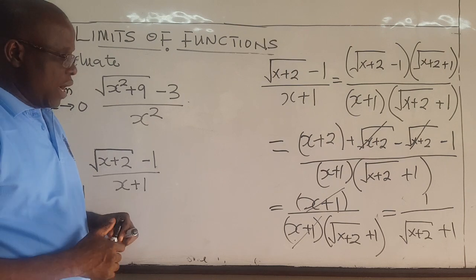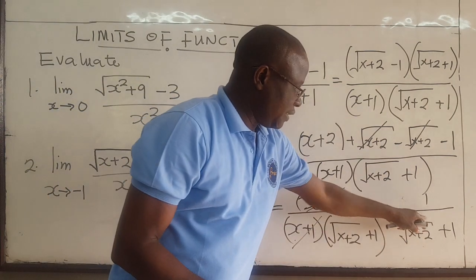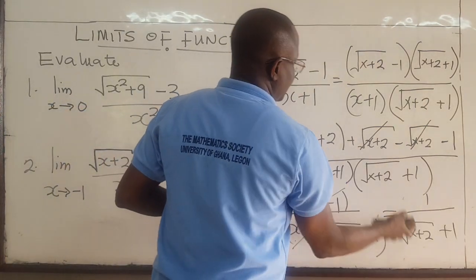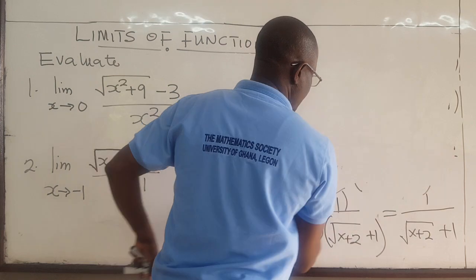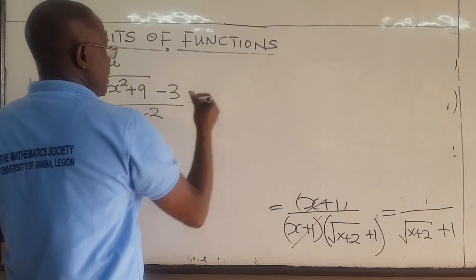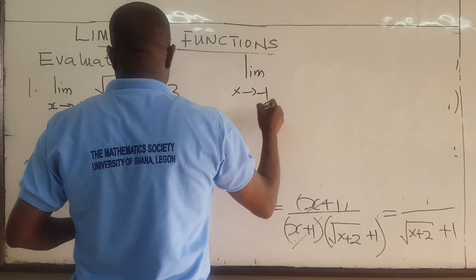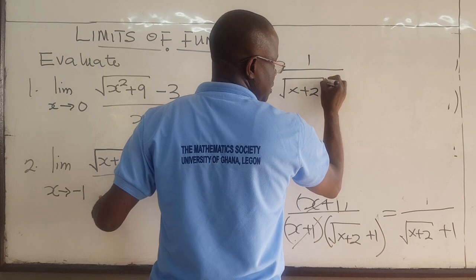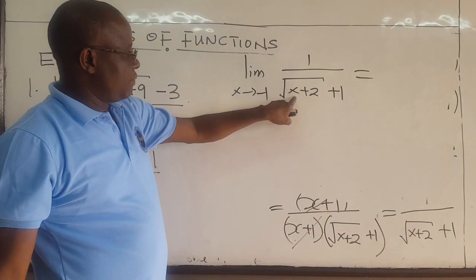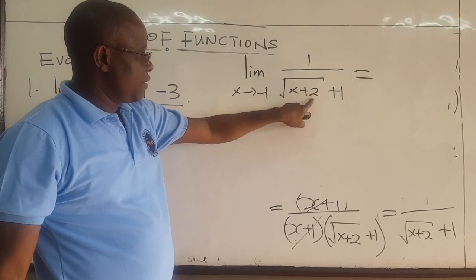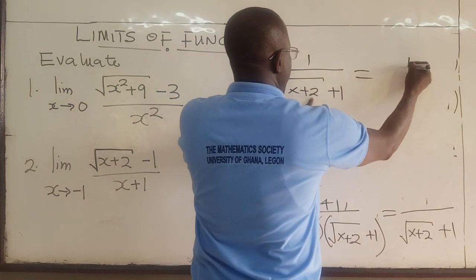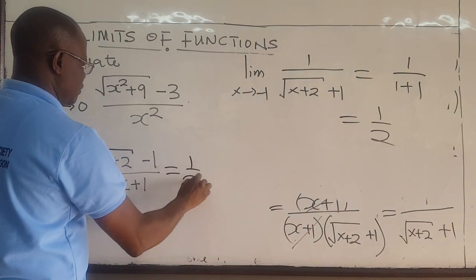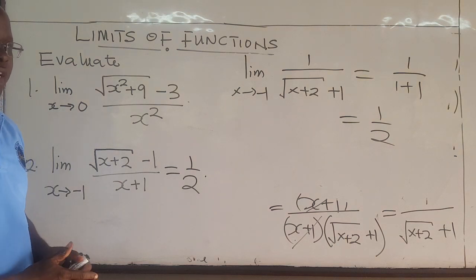Once again, by rationalizing we've reduced the expression to a form that's easy to evaluate. The limit as x approaches negative 1 of the original expression now equals the limit of 1 over the square root of x plus 2 plus 1. Substituting negative 1: negative 1 plus 2 is 1, the square root of 1 is 1, so this is 1 over 1 plus 1, which equals 1 over 2. So the limit as x approaches negative 1 is equal to 1 over 2.